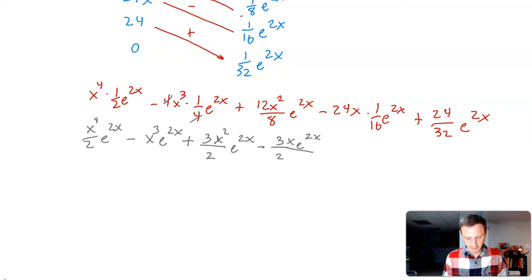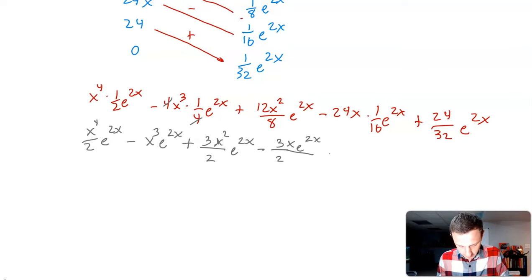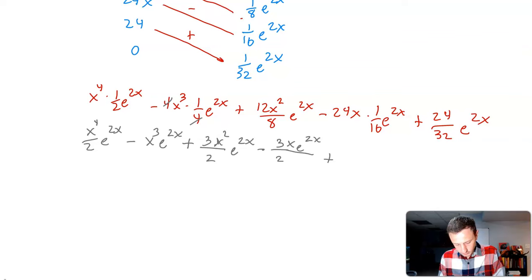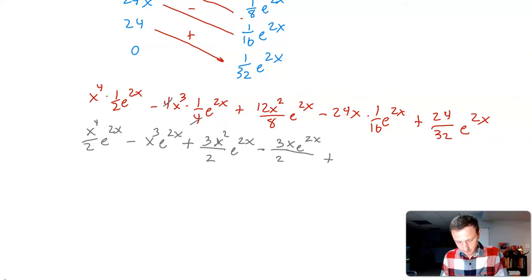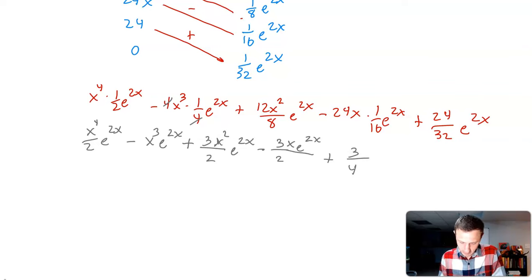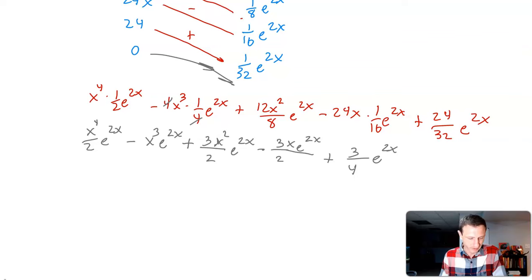And then the last term: 24 over 32 reduces to 3/4 e to the 2x. Notice there's no extra term at the end because the derivative zeroed out — that's the whole point. So that would be the final answer.